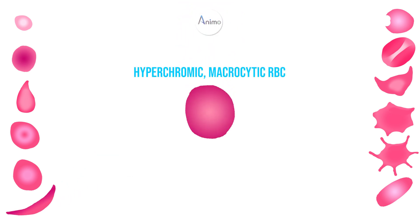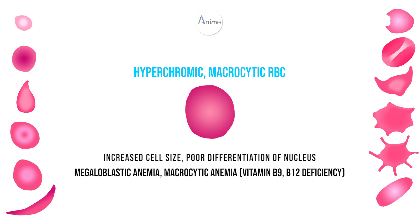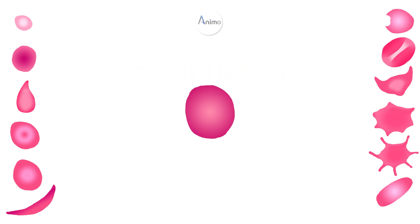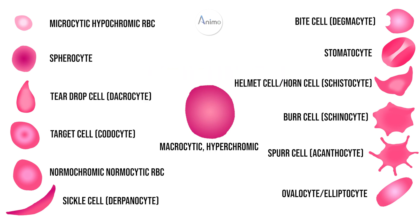The last RBC morphology is hyperchromic macrocytic RBC. It has increased cell size due to poor differentiation of the nucleus. It is found in megaloblastic anemia and macrocytic anemia, such as vitamin B9 and B12 deficiency.